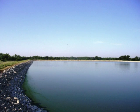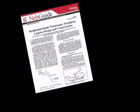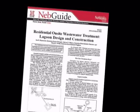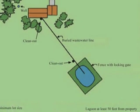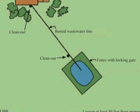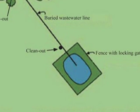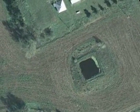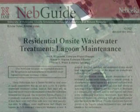A properly designed, installed, and maintained system should treat wastewater to minimize the impact on groundwater, surface water, and human health for decades. This program covers proper maintenance of a residential lagoon on-site wastewater treatment system. Wastewater flows from the household wastewater plumbing through an underground pipe that leads to the lagoon, usually by gravity, where treatment occurs and water returns to the environment through evaporation.